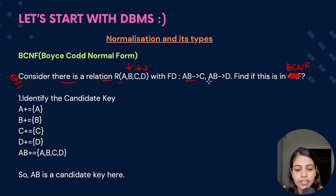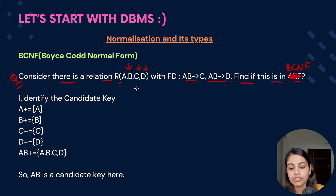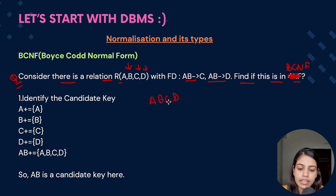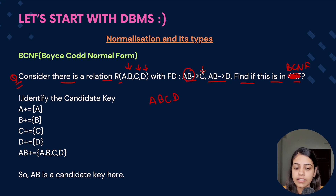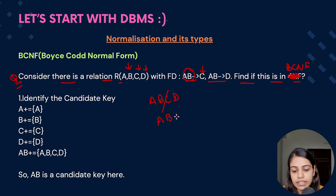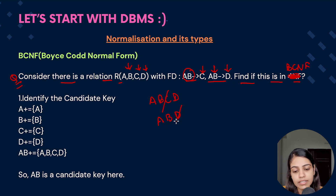Let's understand with an example. Consider a relation R with attributes A, B, C, and D, with some functional dependencies provided. Find if this relation is in BCNF or not. First, we identify the candidate key by writing down all attributes and checking determinants and dependents. C is a dependent and its determinant is AB, so we can discard C, leaving ABD. For the next dependency, D is the dependent and AB is the determinant, so we discard D, leaving AB.